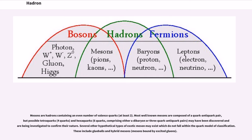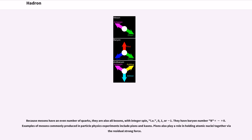Several other hypothetical types of exotic mesons may exist that do not fall within the quark model classification, including glueballs and hybrid mesons (mesons bound by excited gluons). Because mesons have an even number of quarks, they are all bosons with integer spin (i.e., 0, +1, or −1) and baryon number B = 0. Examples of mesons commonly produced in experiments include pions and kaons. Pions also play a role in holding atomic nuclei together via the residual strong force.